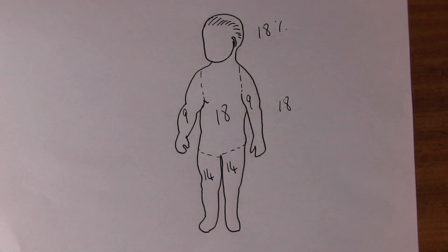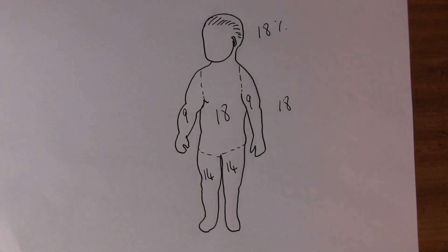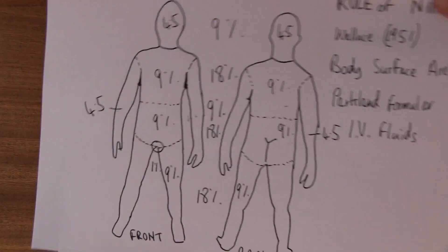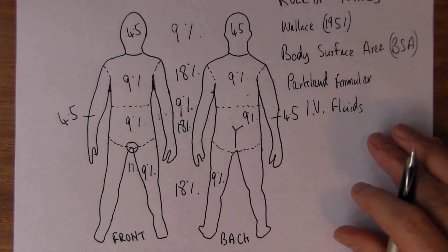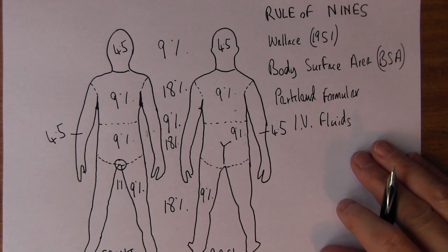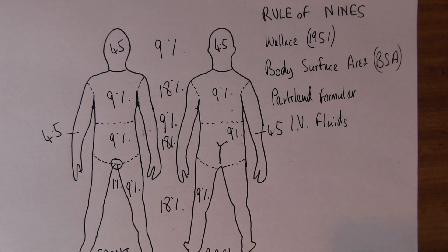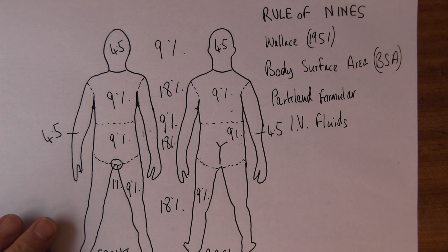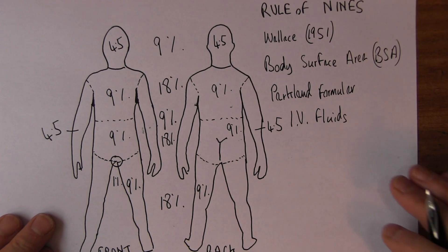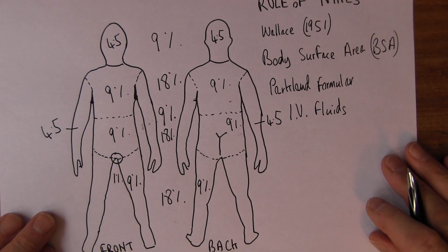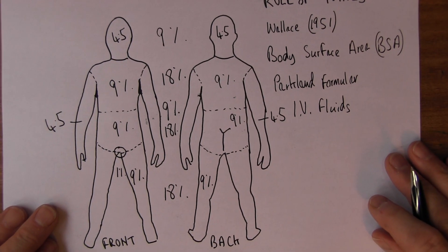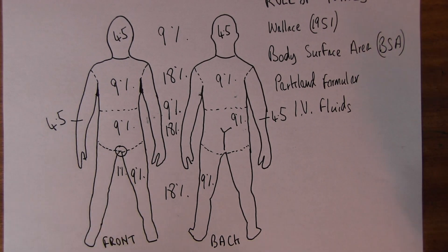So it's really surprising — the body never ceases to surprise you — that it's all divisible into 9s. And that was identified by Wallace in 1951. 9s, 18s, or 4.5s.